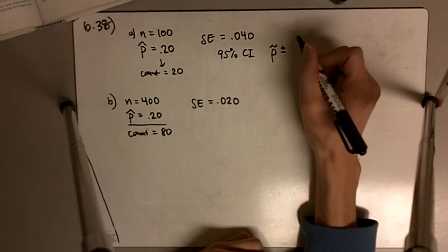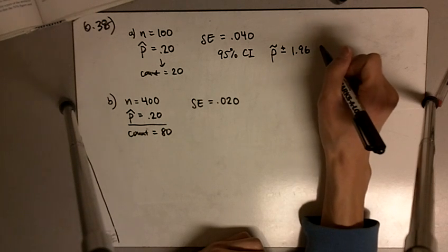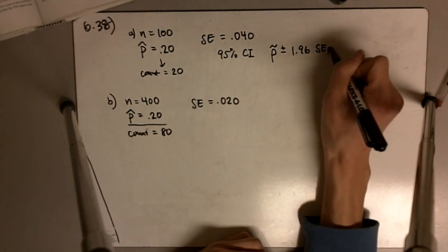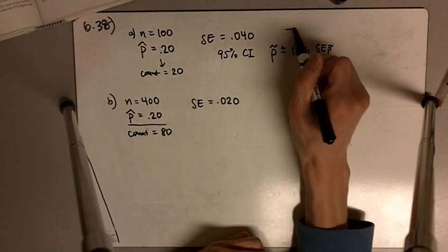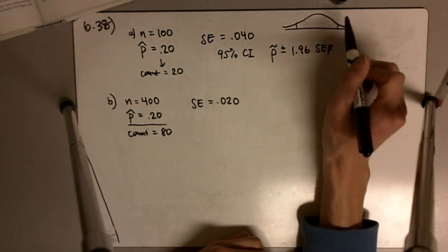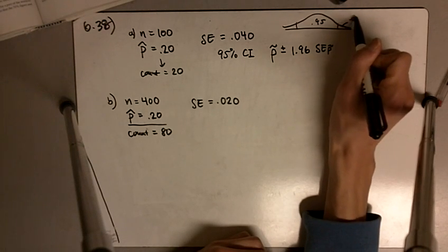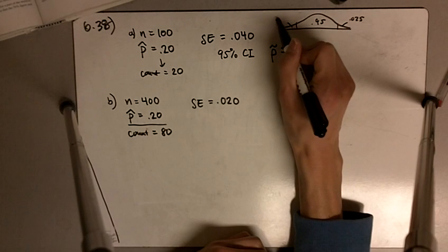And that 1.96 comes from the Z distribution where we're looking to have 0.95 here and 0.025 here and 0.025 here.